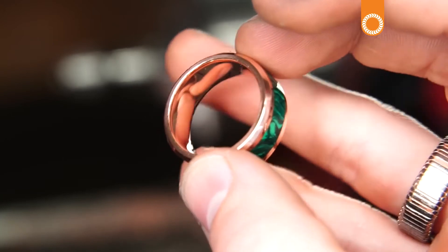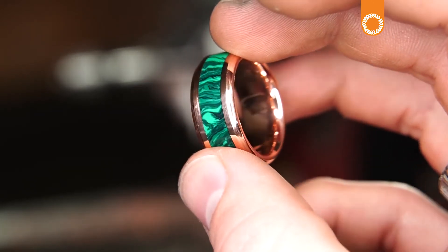You can see just how unique this ring looks. I think the malachite and the copper just go so nicely together.